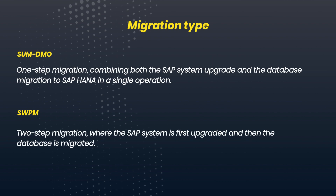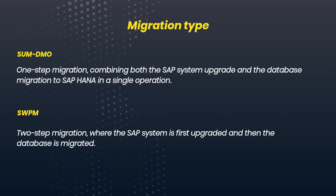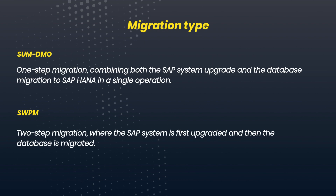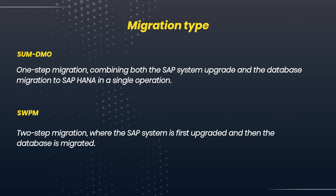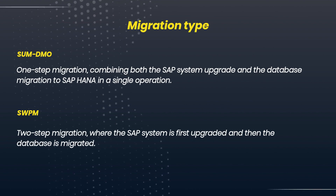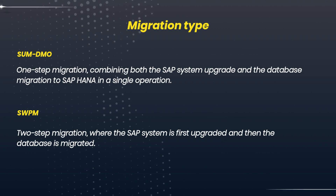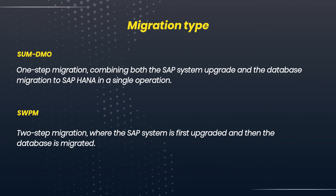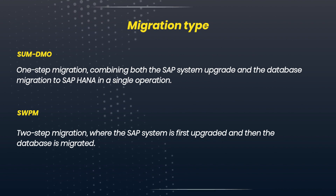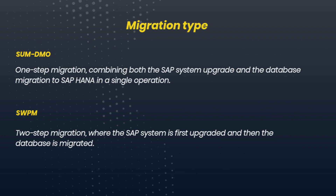The migration type of SUM DMO is one-step migration, combining both the SAP system upgrade and the database migration to SAP HANA in a single operation. The migration type of SWPM is two-step migration, where the SAP system is first upgraded and then the database is migrated.